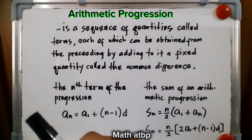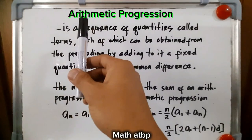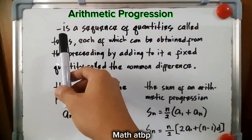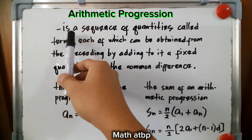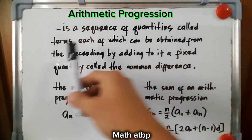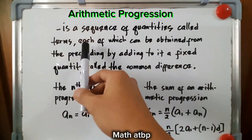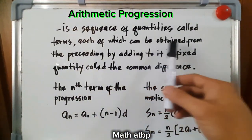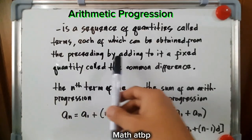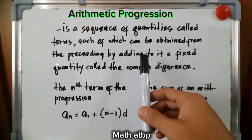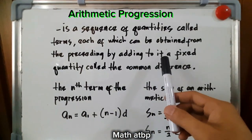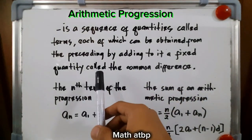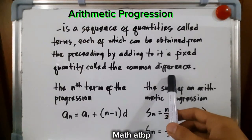Hi, today we will be discussing arithmetic progression. What is arithmetic progression? It is a sequence of quantities called terms, each of which can be obtained from the preceding by adding to it a fixed quantity called the common difference.